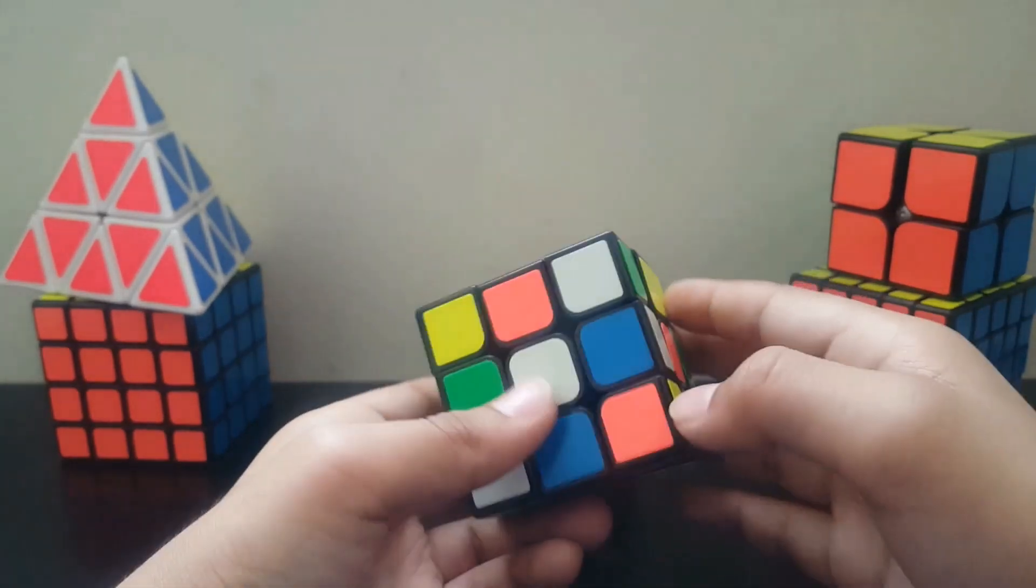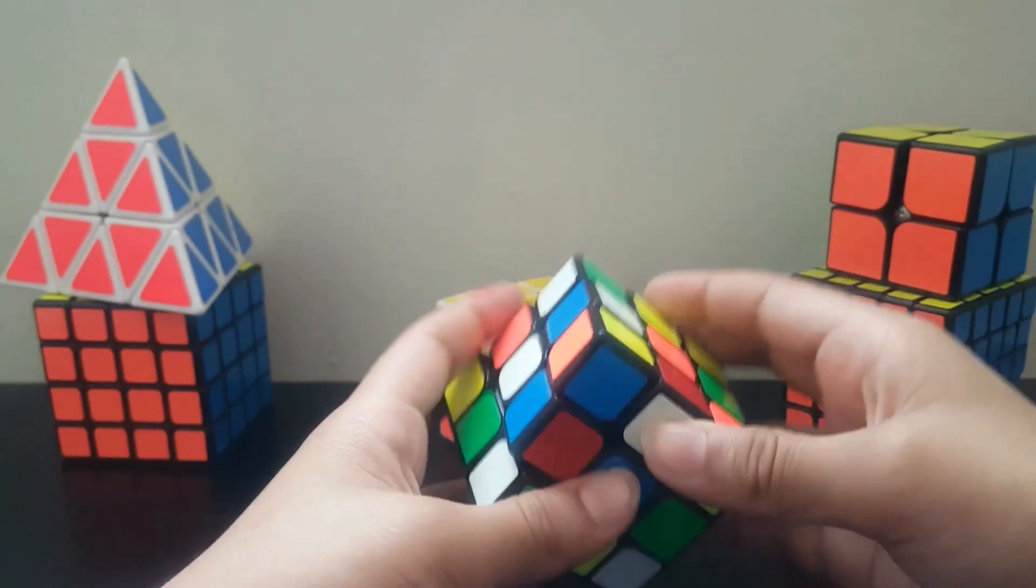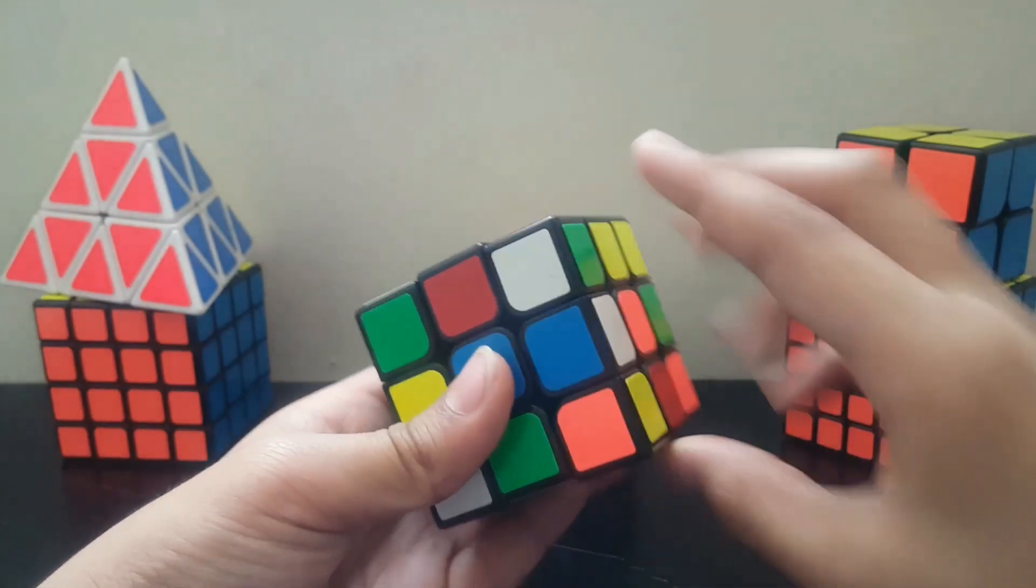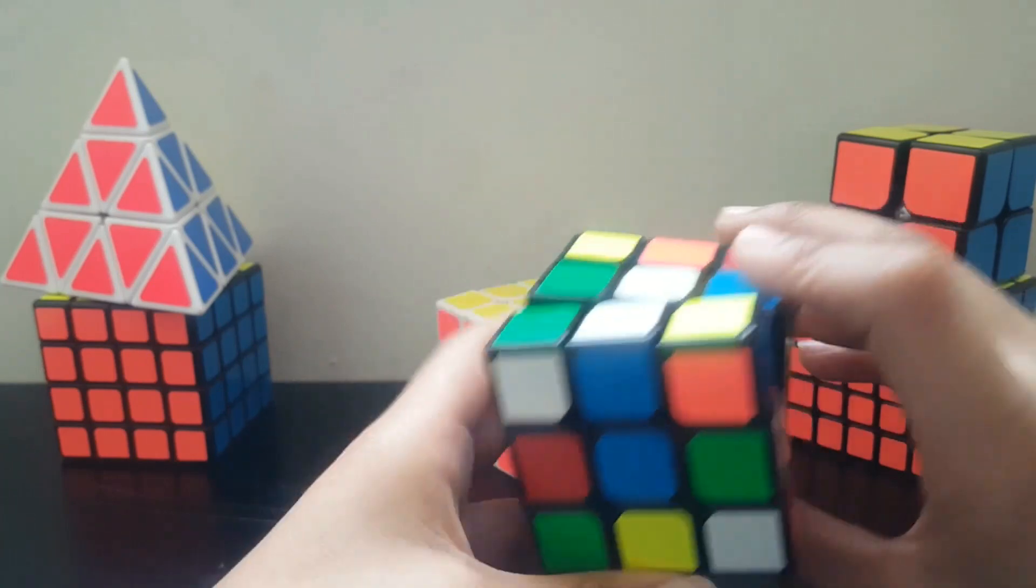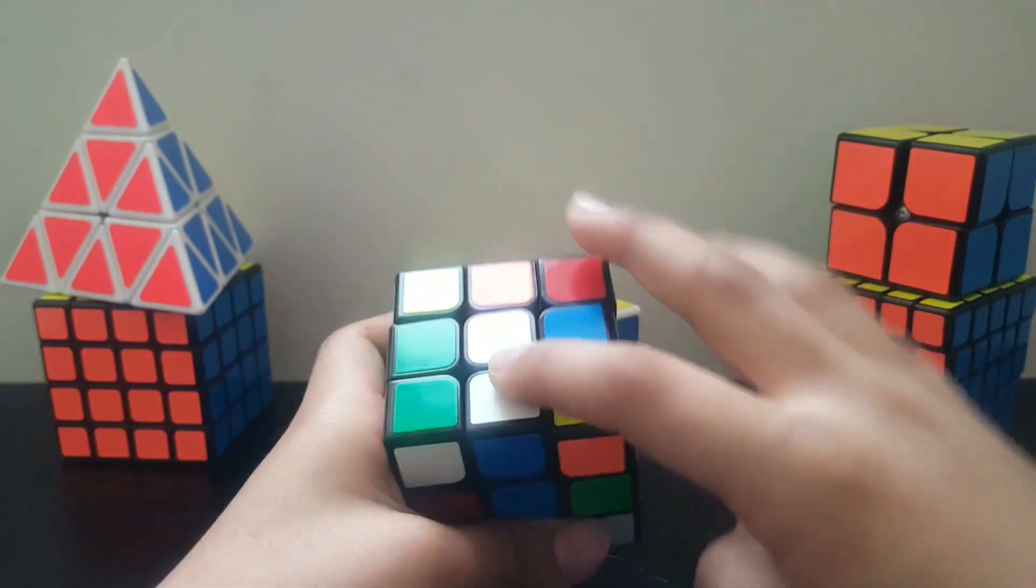Now I have found the centerpiece. It's here, white and blue. So when we bring it like this and like this, it will get aligned to the centerpiece.